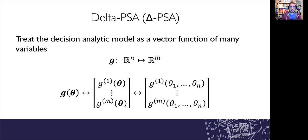The delta PSA is an alternative to the Monte Carlo PSA. We treat the decision analytic model as a vector function of many variables. So we've got g superscript one up to g superscript m, so m different possible outputs from the model, and then the various inputs to the model are thetas one to n.